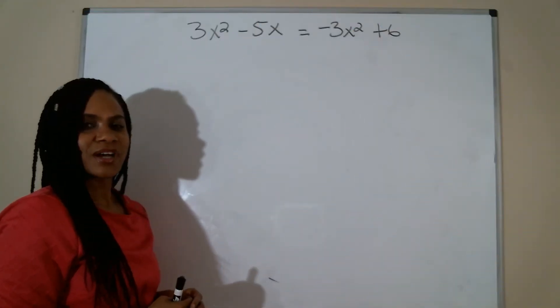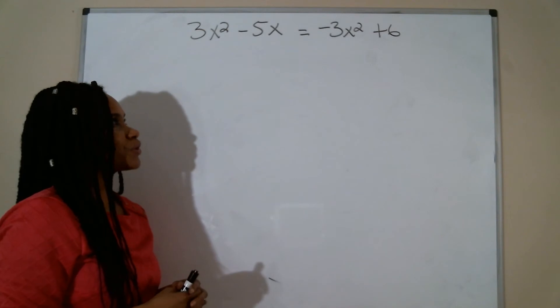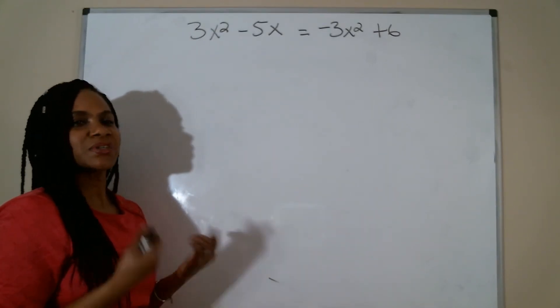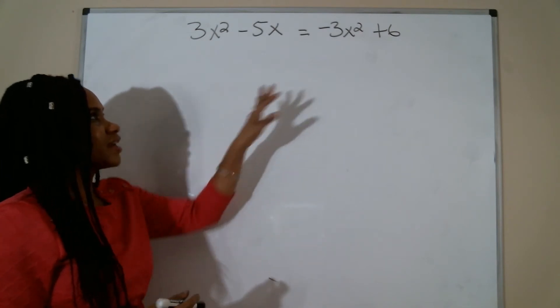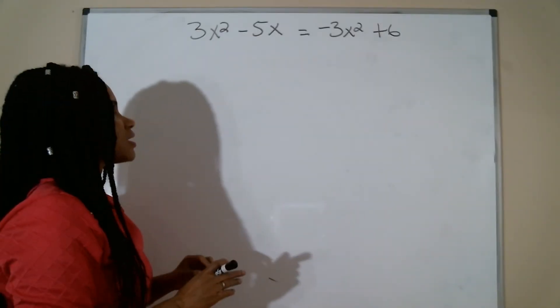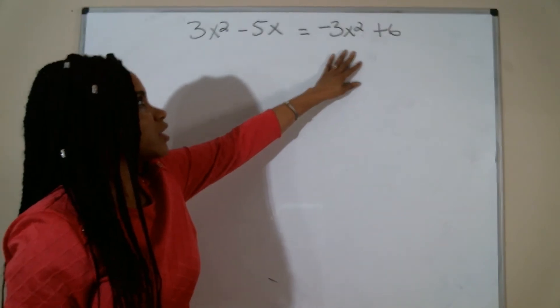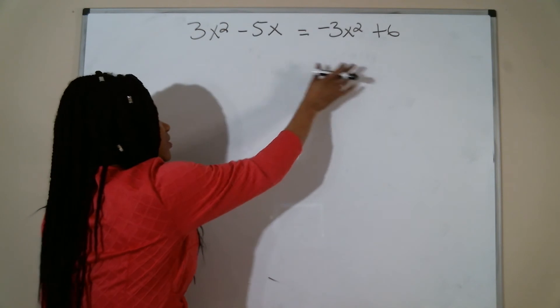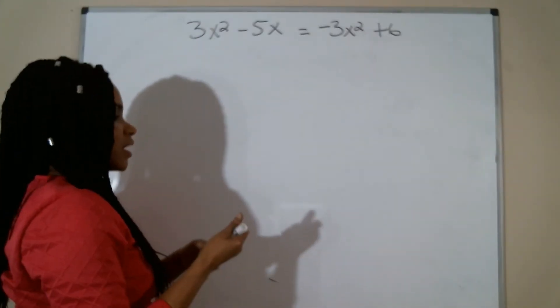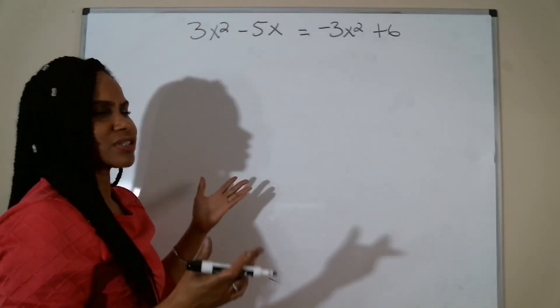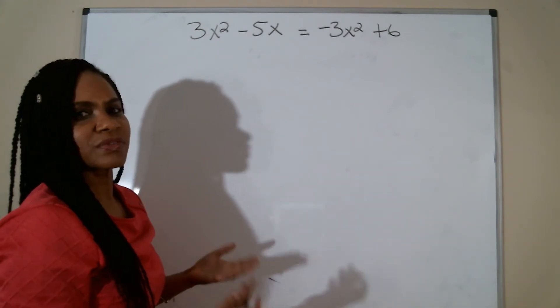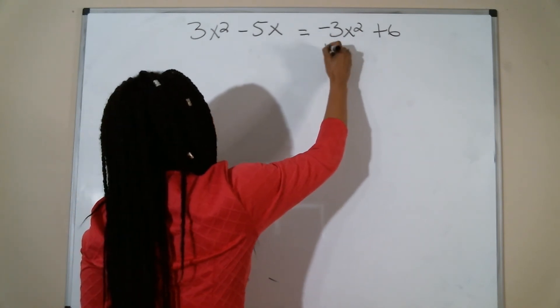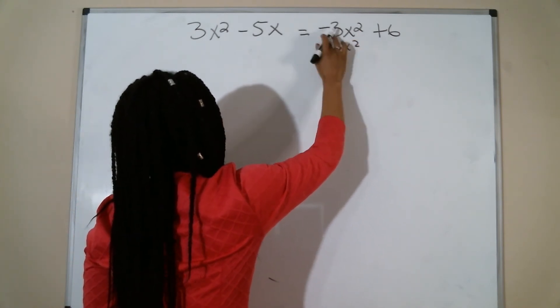I'm going to try one more problem with you before I have you try one on your own. So we want to solve this equation by factoring using the slip and slide method. You want to move everything to one side. I could either move the negative 3x plus 6 to my left hand side or move this over here. I have a habit of moving everything to my left hand side.